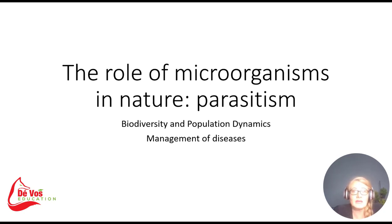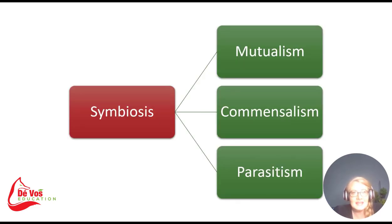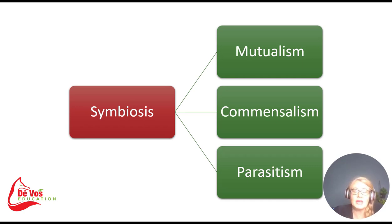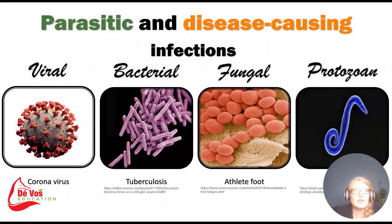Specifically, we'll be focusing on parasitism and the management of diseases. So if you can remember, symbiosis is a biological dance where two or more species share a close physical proximity, interacting in various ways. These interactions can be beneficial, harmful, or neutral, and they're prevalent in the microbial world. Commensalism benefits one microorganism while leaving the other unaffected — think of microbes on your skin as an example. Mutualism benefits both organisms, which we discussed in the previous lesson. So now let's dive into the darker side of symbiosis called parasitism.